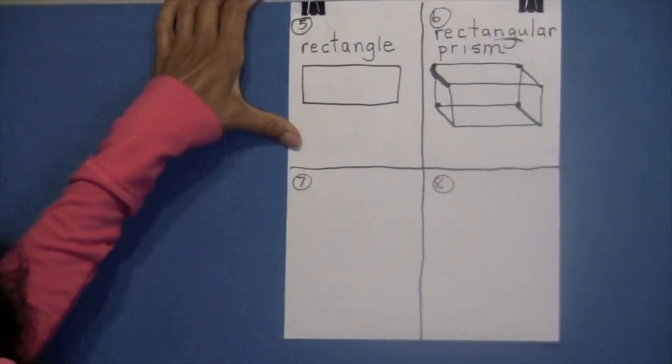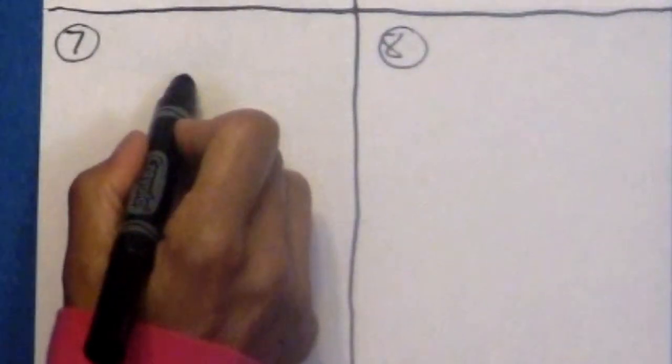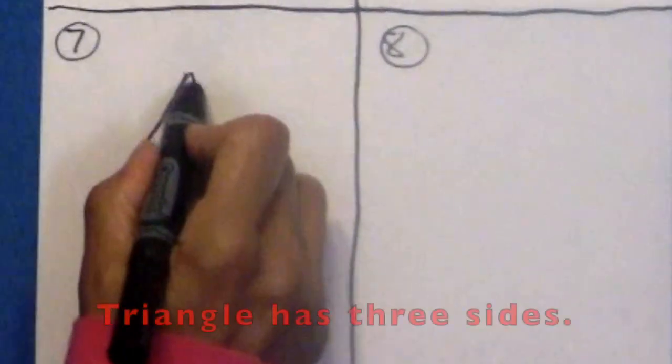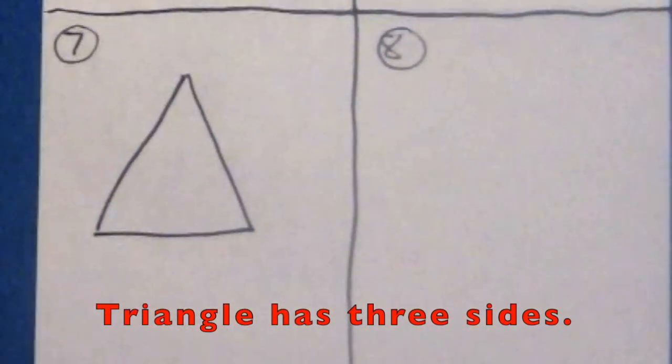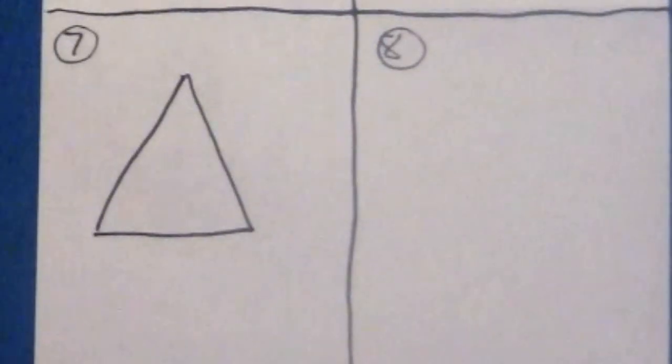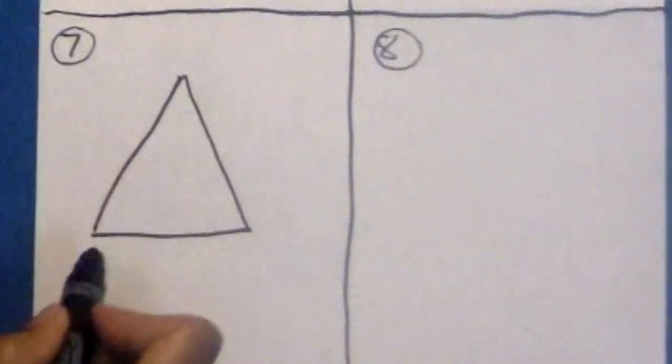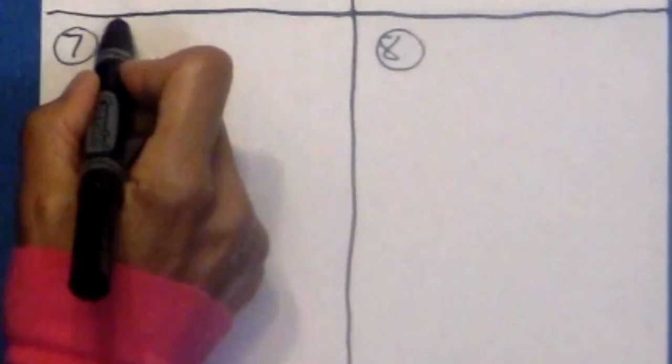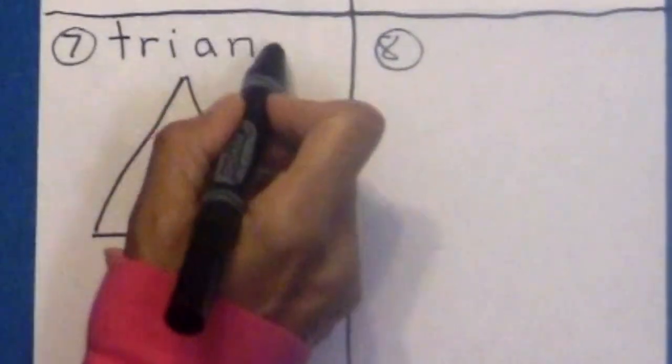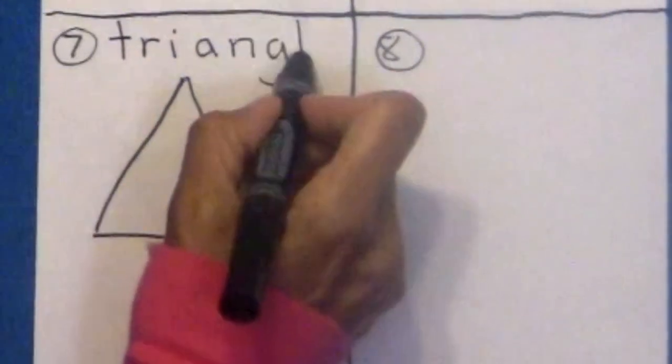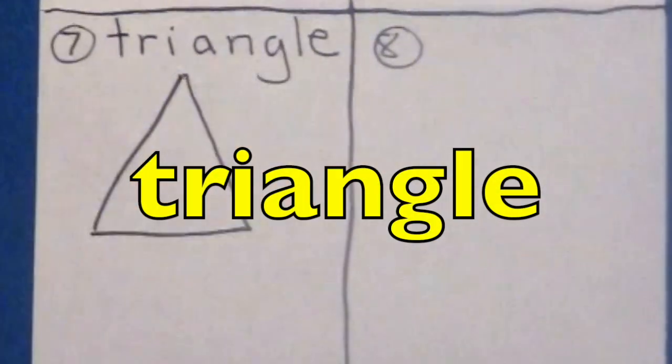Box number seven. We are going to now draw a triangle. A triangle has three sides. In triangles, the sides can be different sizes, but this one we're going to have the same size. How do we spell triangle, boys and girls? T-R-I-A-N-G-L-E. Triangle. Yes.